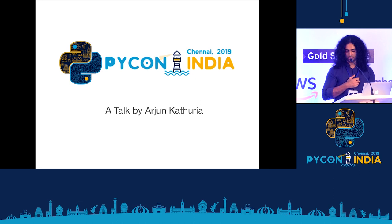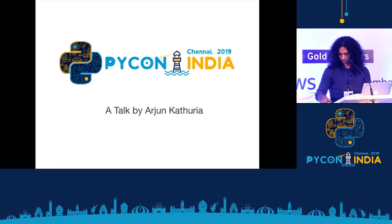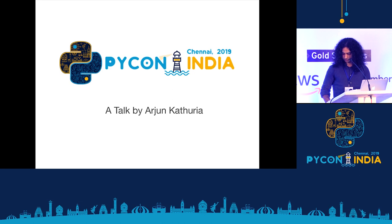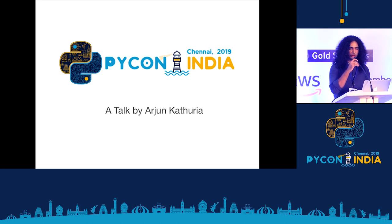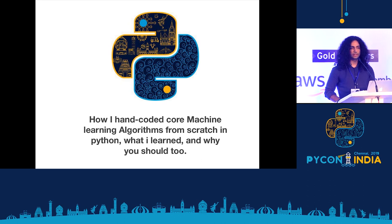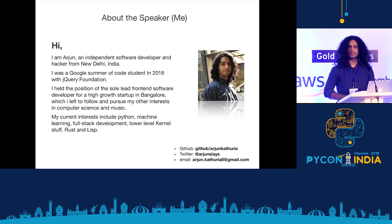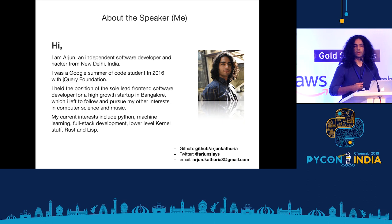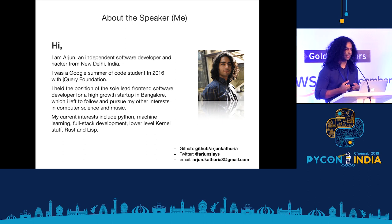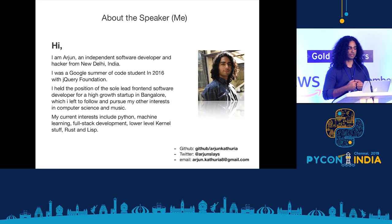We have Arjun here. He's going to talk about how he handcoded core machine learning algorithms from scratch in Python, what he learned and why you should do it. My name is Arjun and I'm an independent software developer and hacker from New Delhi, India. I was a Google Summer of Code student in 2016 with the jQuery Foundation. I also worked at a high-growth startup in Bangalore before moving back to Delhi and pursuing my other interests in computer science and music.